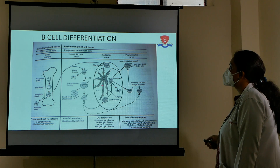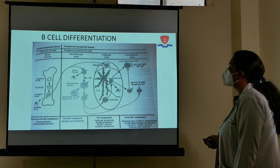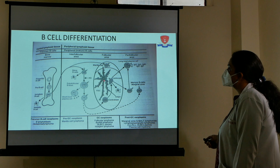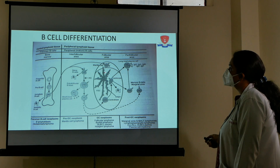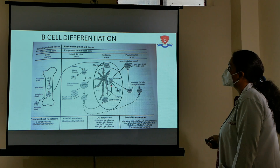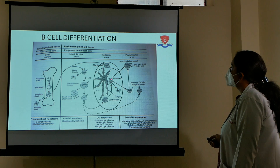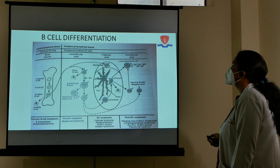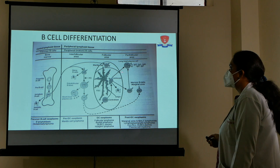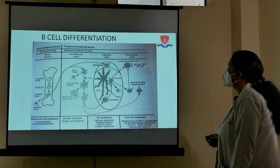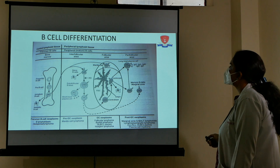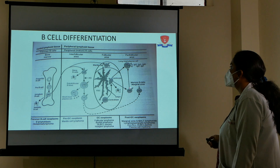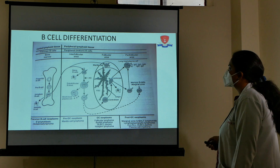Mantle cells go into the follicular germinal centers and develop into centroblasts and centrocytes. The follicular dendritic cells present in the germinal centers maintain the polarization of the follicular germinal center. After this, centrocytes develop into either mature lymphocytes or, when antigenically activated, into plasma cells to release antibodies, or they develop into memory B cells.